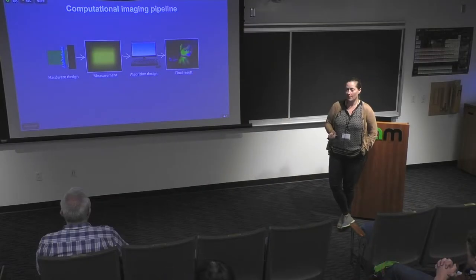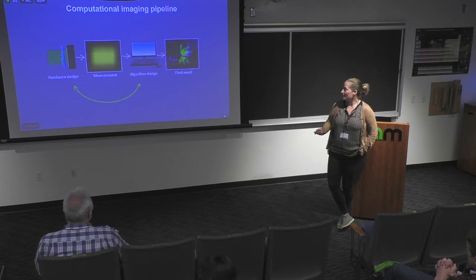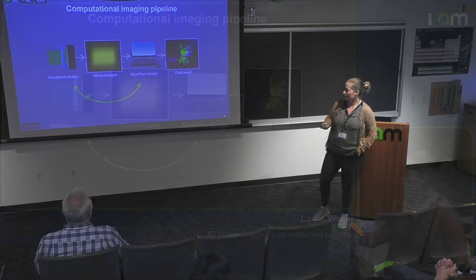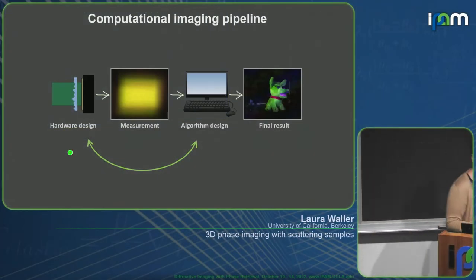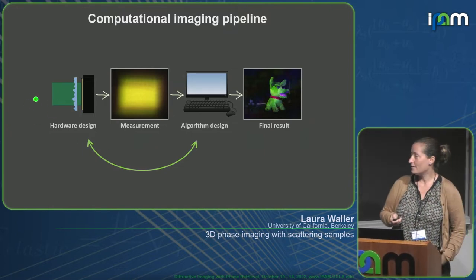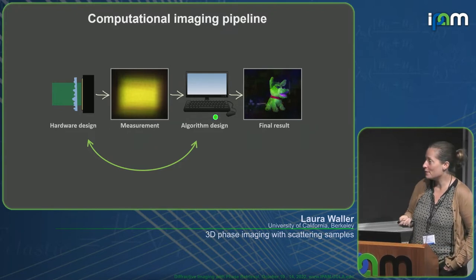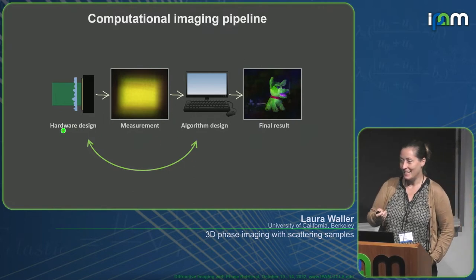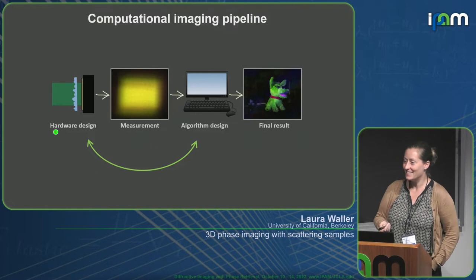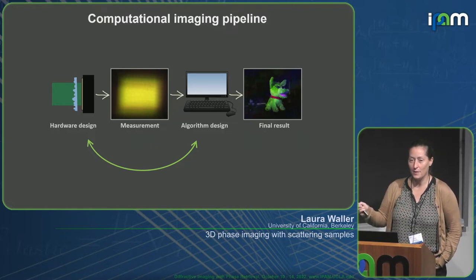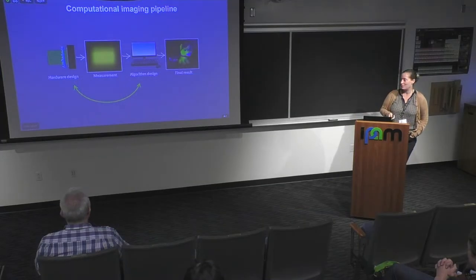It's all based around computational imaging — this idea of designing your system software and hardware together. You have some hardware to design with optical physics and some algorithm that you can design. Collaborators from math and signal processing always want to do just the algorithm part and ignore hardware design. But computational imaging is all about the trade-offs between the two and how they interact. The most interesting problems are really at this interface between hardware design and algorithm design.